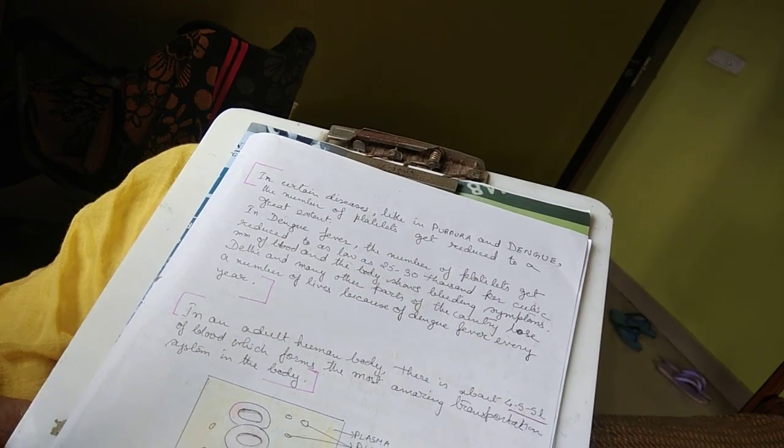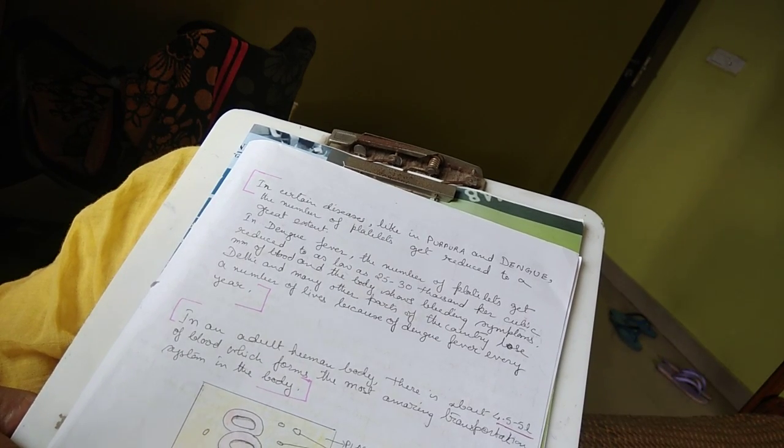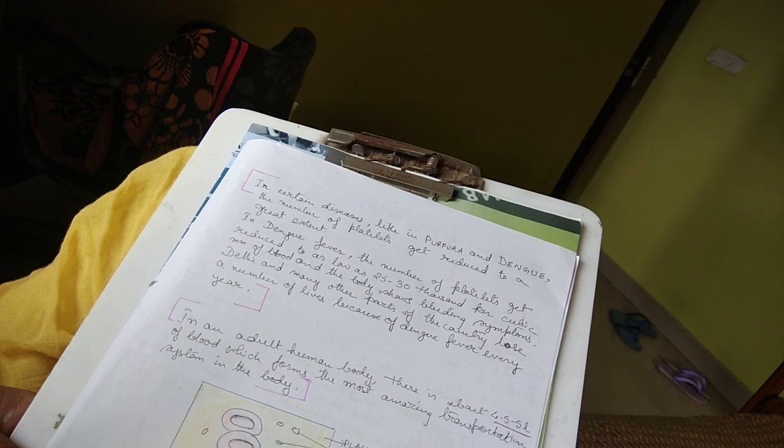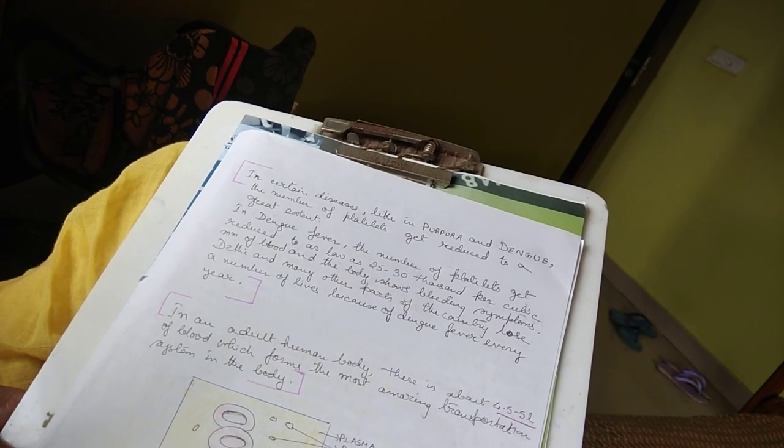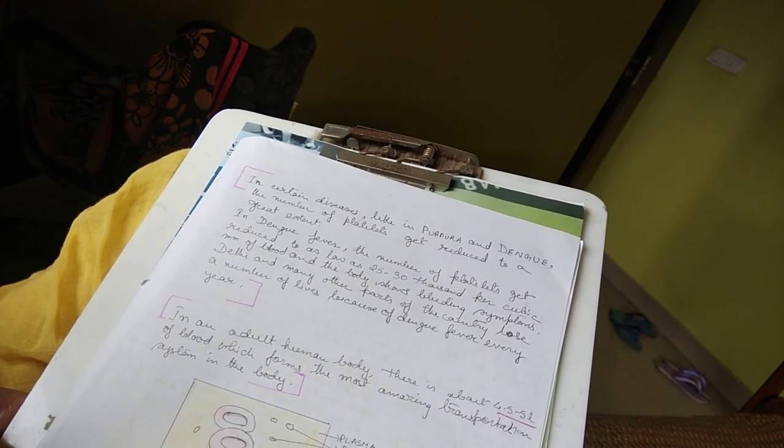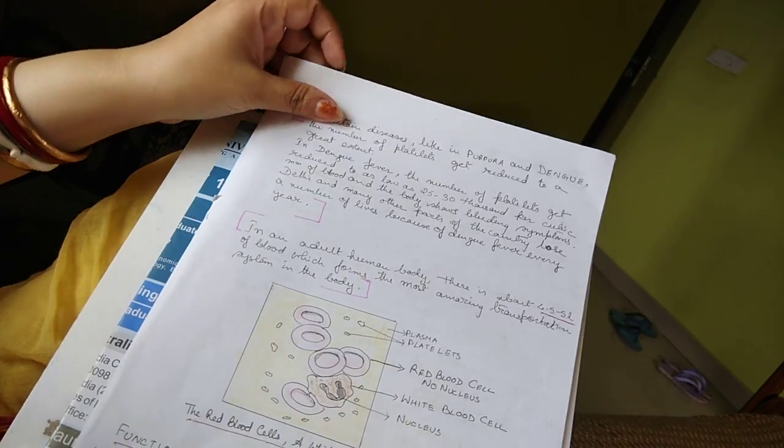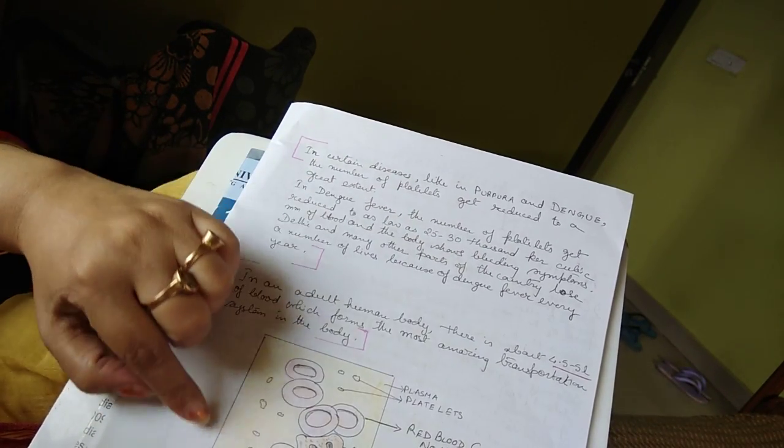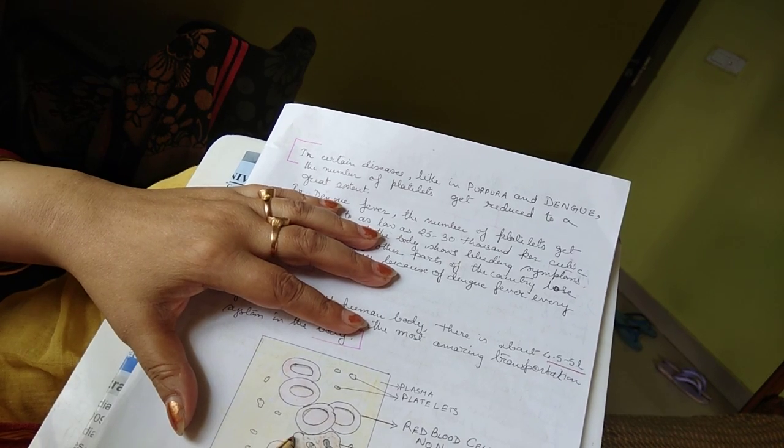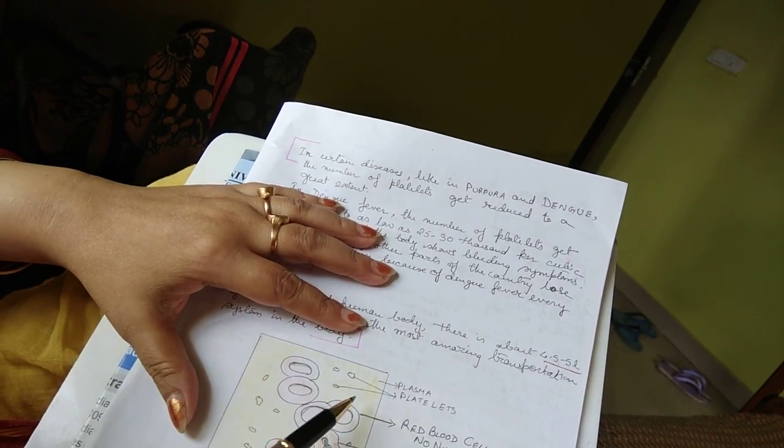There are some diseases such as purpura and dengue where the platelets are very low. In dengue fever, the platelets become as low as 25,000 per cubic millimeter of blood. In Delhi, the platelets are very low, which works in the transportation system. This is a picture of a blood cell. This is a red blood cell. This is a white blood cell which has distinct lobed nucleus. This is a platelet. This is plasma.